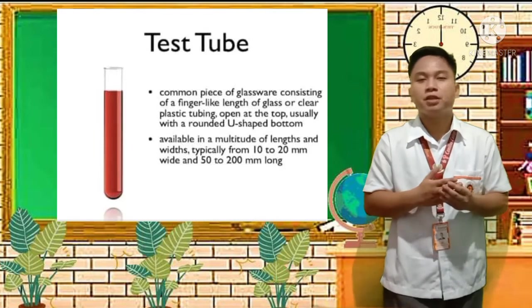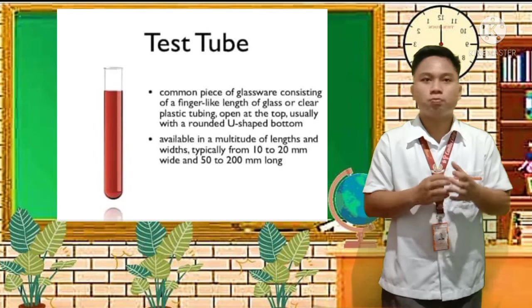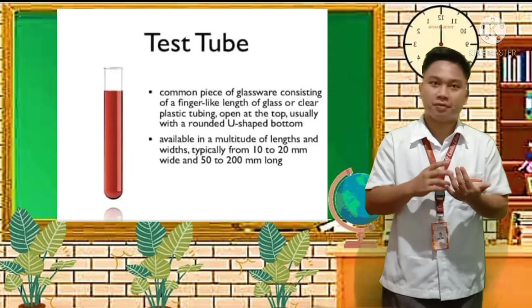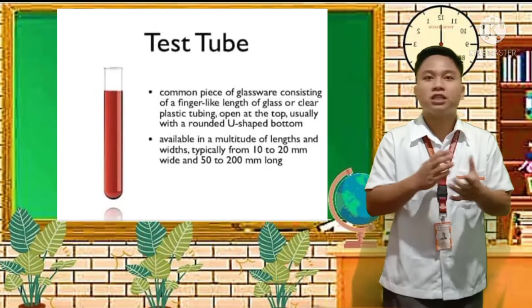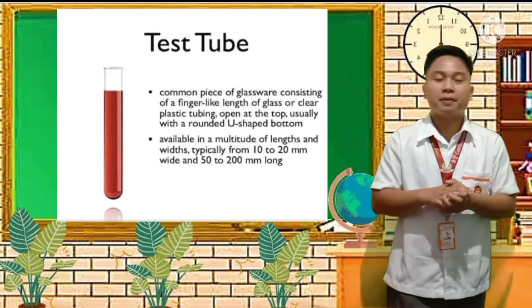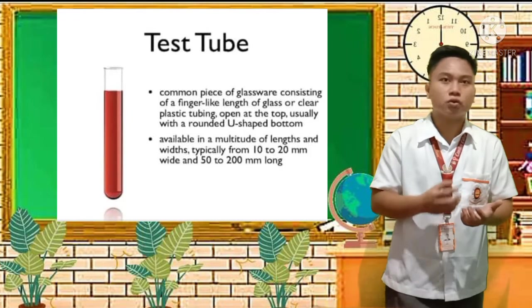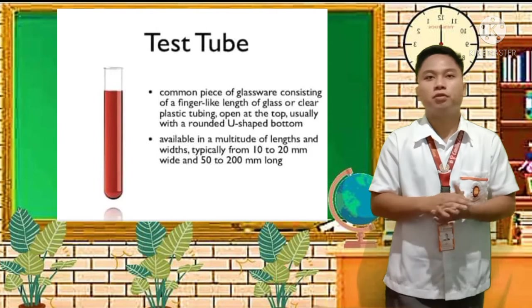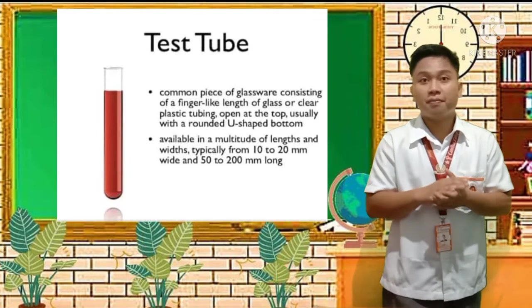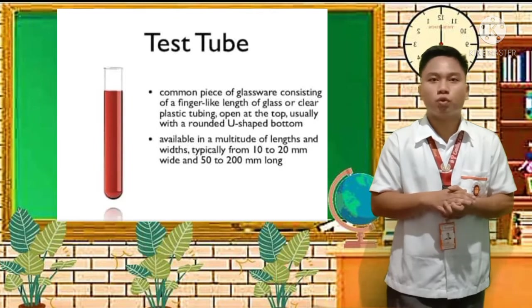The test tube looks like a finger — cylindrical below with a round bottom. Because it has a U-shaped bottom, you need a designated holder so it doesn't tip over. It is available in a multitude of lengths and widths, typically from 2 to 20 mm wide and 50 to 200 mm long.